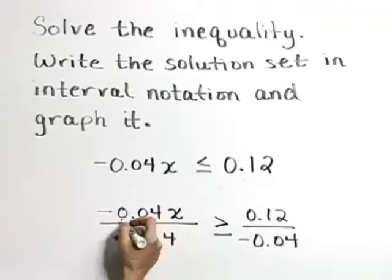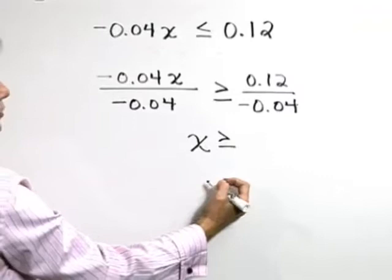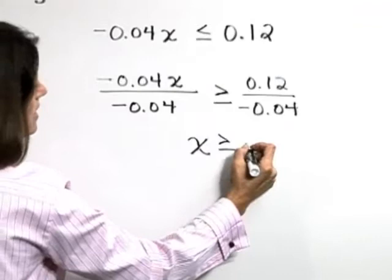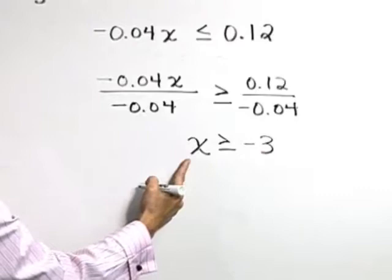These values cancel on the left, leaving x, and x is greater than or equal to the quotient of 0.12 and negative 0.04, which is negative 3.